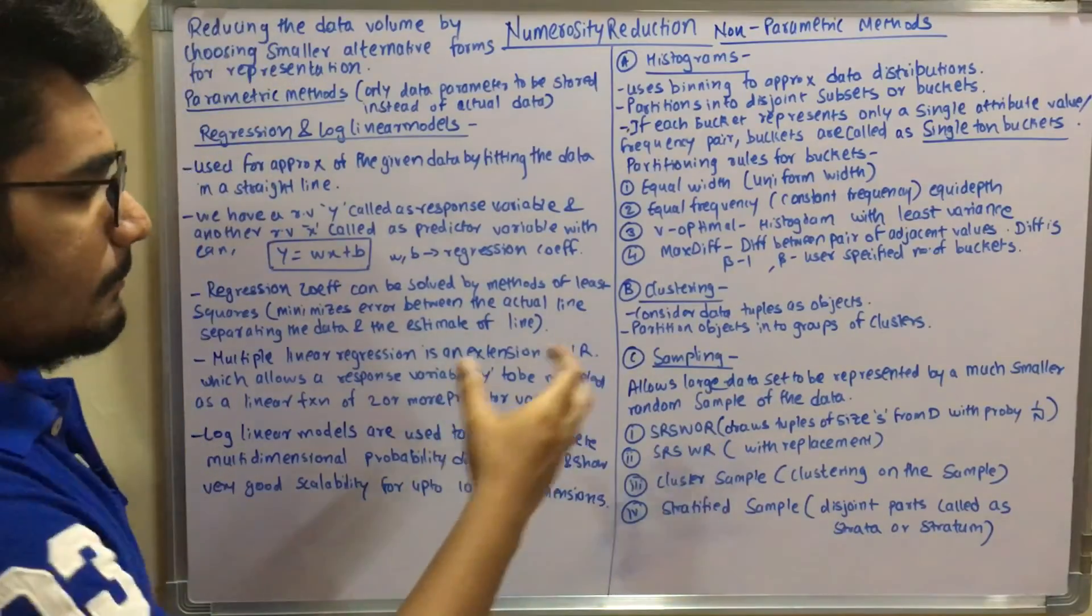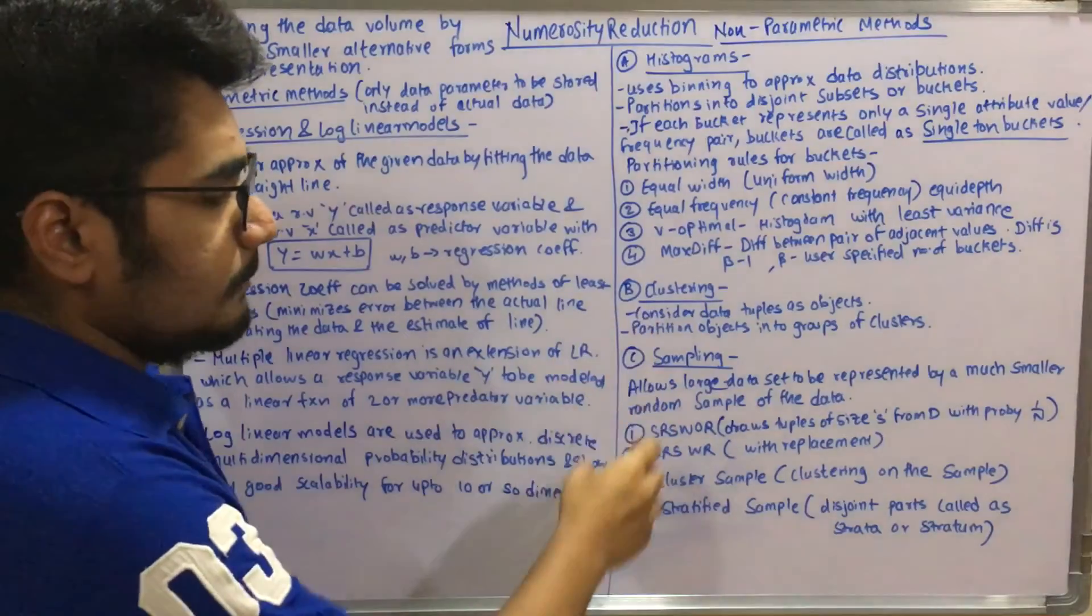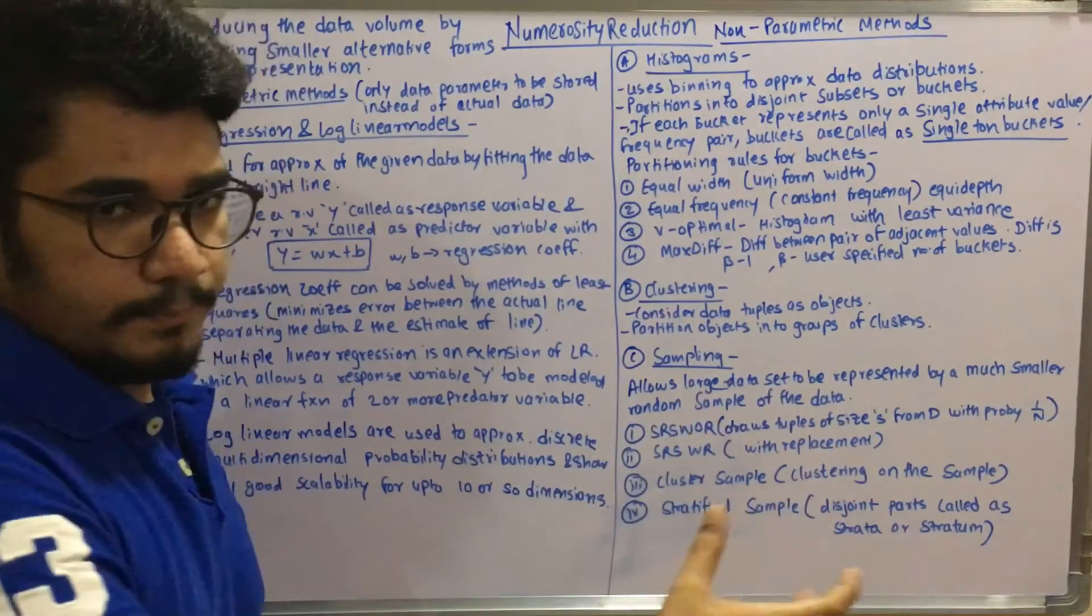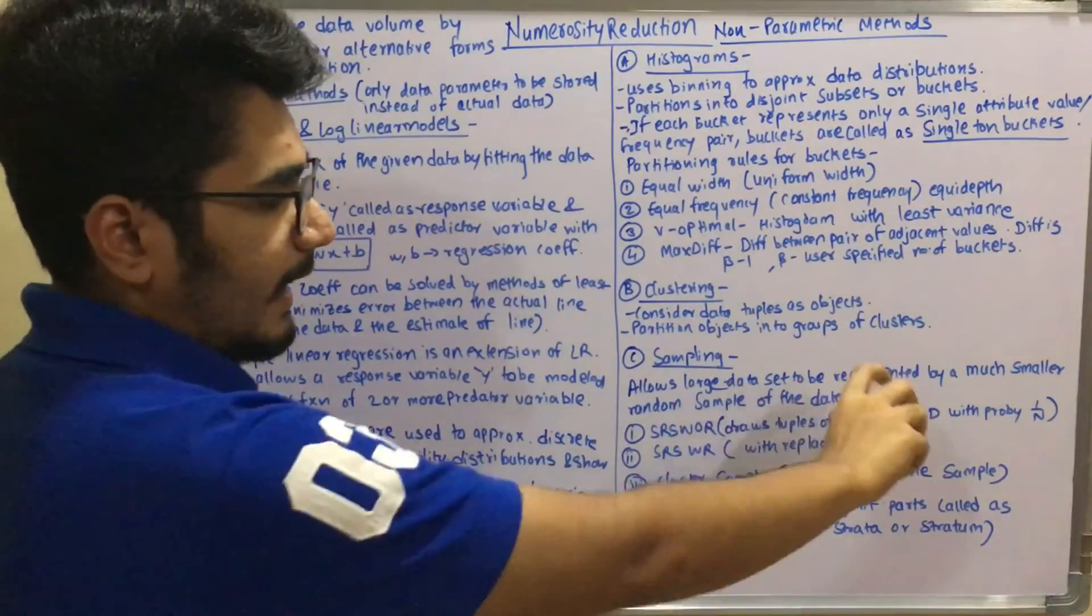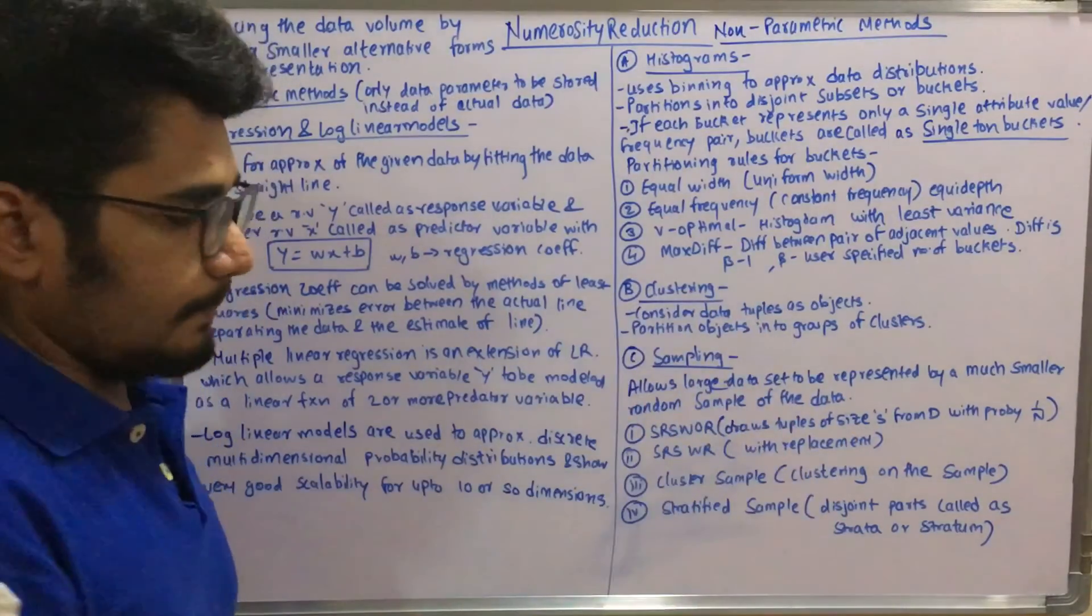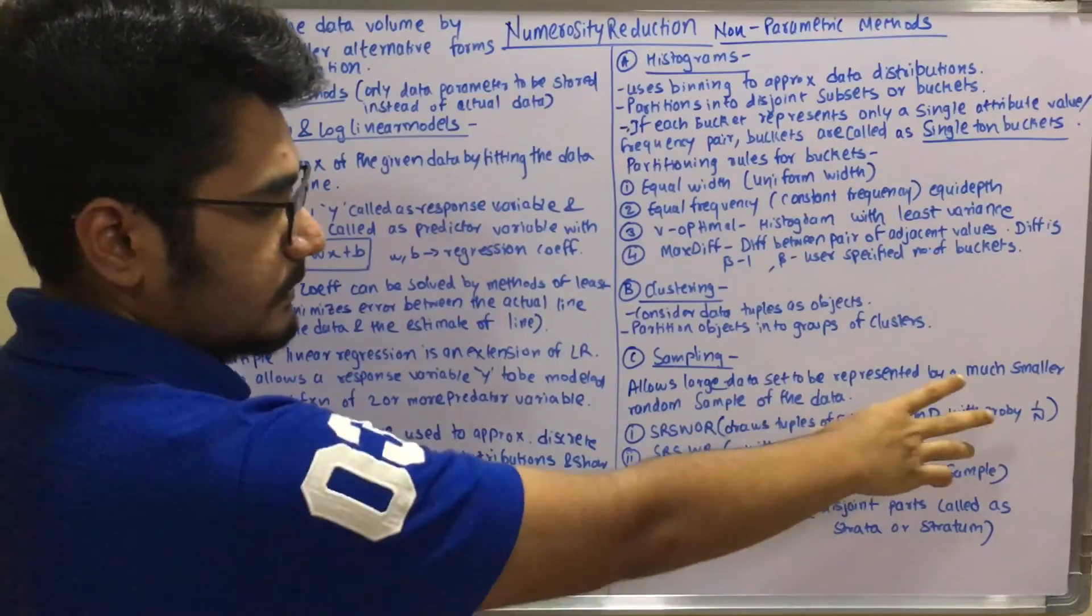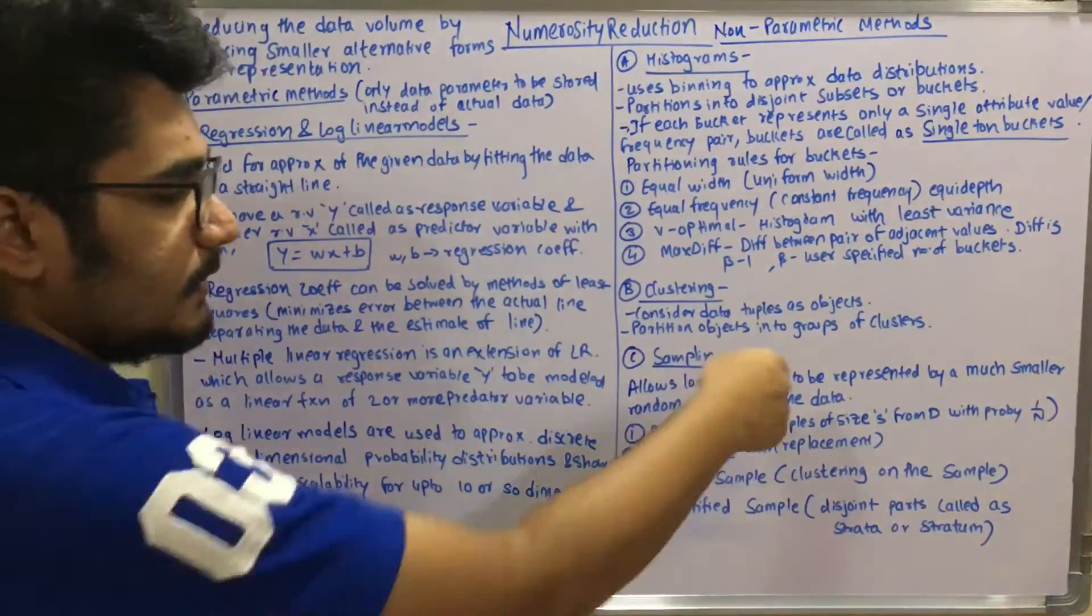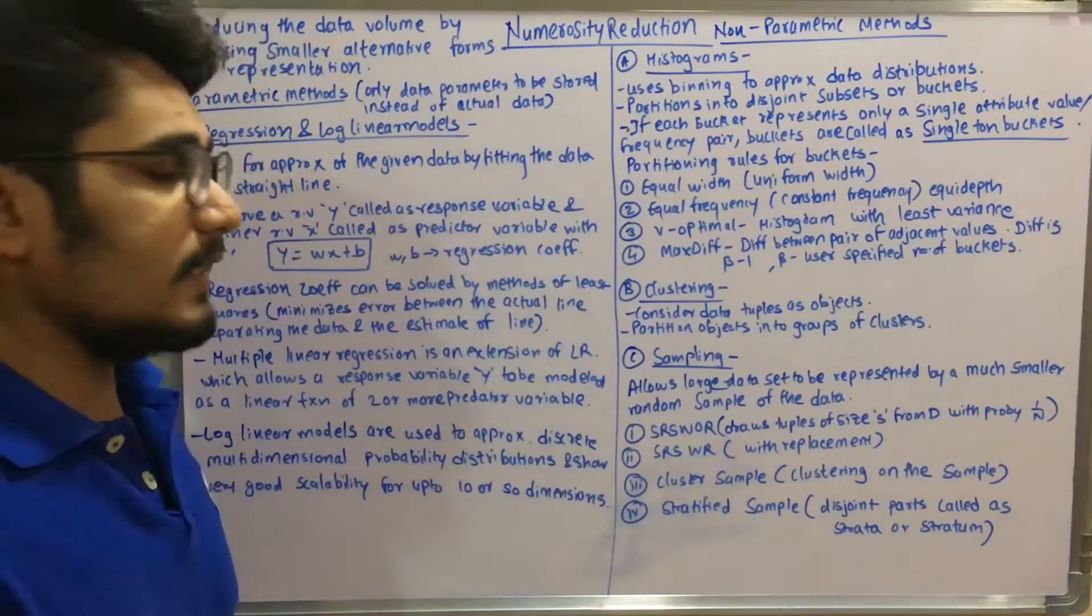So it allows large data sets to be represented by a much smaller random sample of the data. Like you have a very large data set. What do you do? You just segregate into different small samples and then you process it further. So you have four different kinds of sampling methods in this. You have the SRSWR, that is the simple random sample with replacement. So it draws tuples of size s from your data set d, and it does with probability of 1 by n, and this is with replacement. Whereas simple random sample without replacement does the same operation but it doesn't replace with sample. Here it's not with replacement.